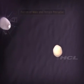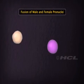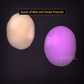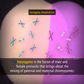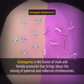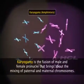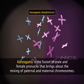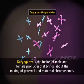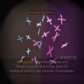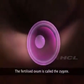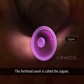The male and female pronuclei come together and fuse. The male and female chromosomes mix. This event is called karyogamy or amphimixis. Fertilization is thus completed. The fertilized ovum is called a zygote.